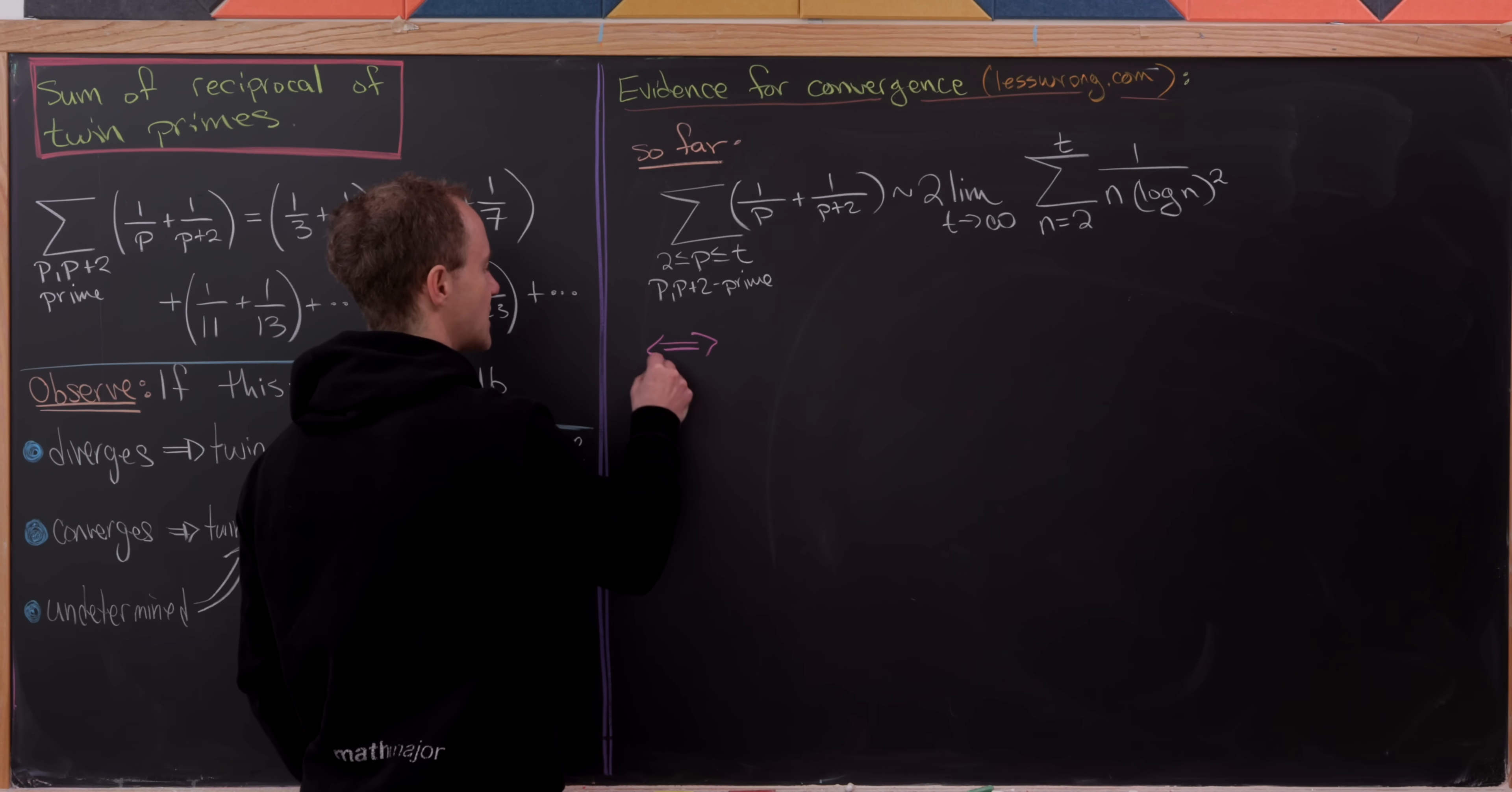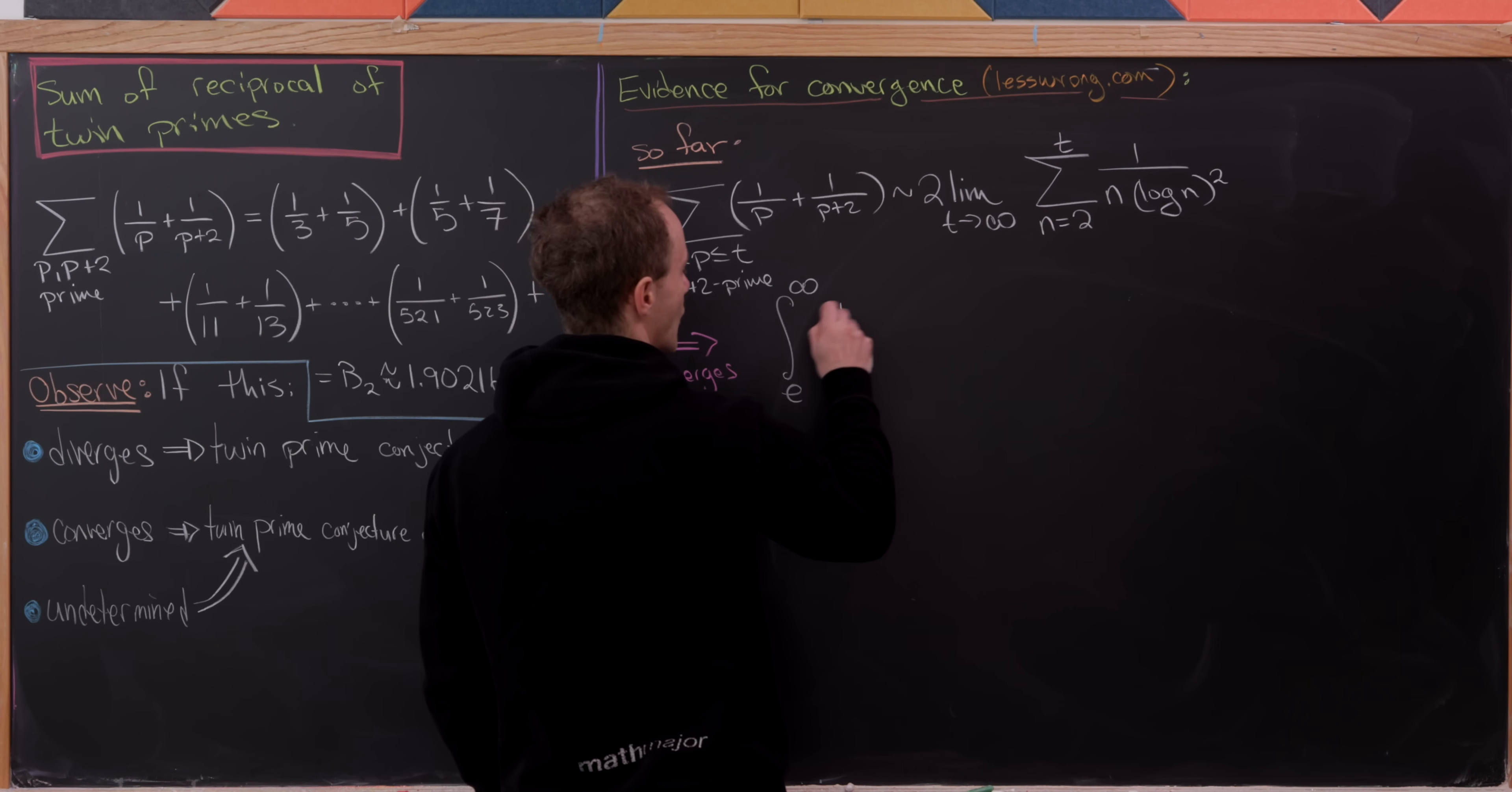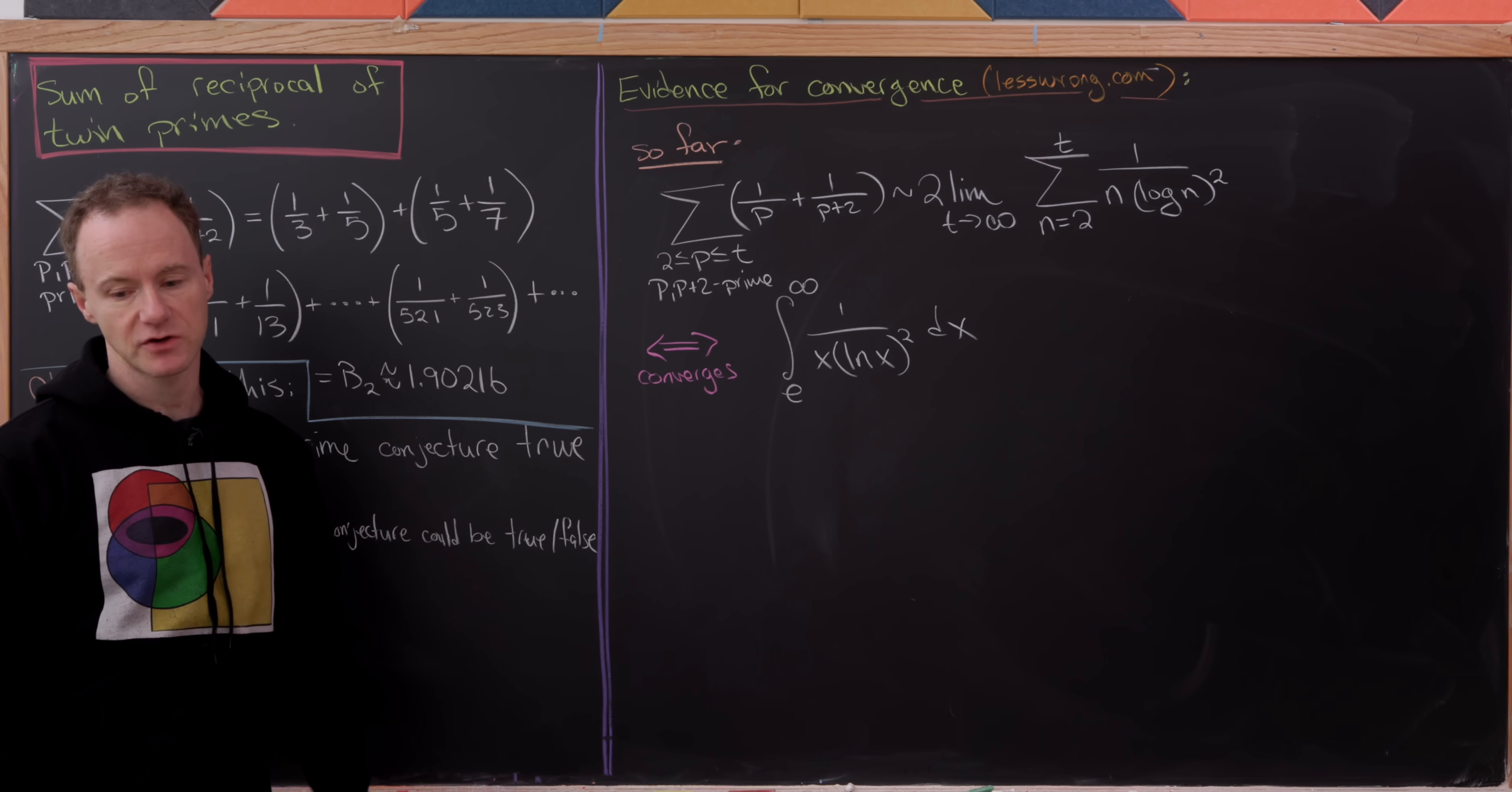Notice that this thing converges if and only if the following integral converges, and that's the integral from e to infinity of 1 over x times, I'll call this the natural log of x squared now. But now can we determine if that converges?